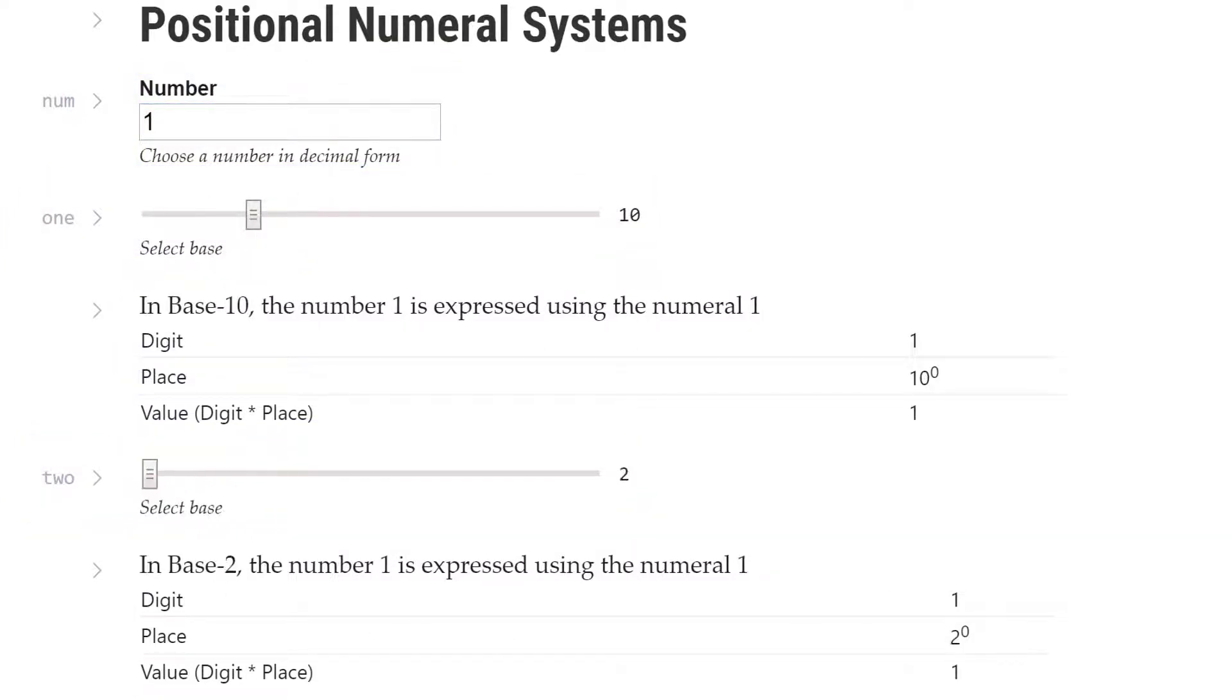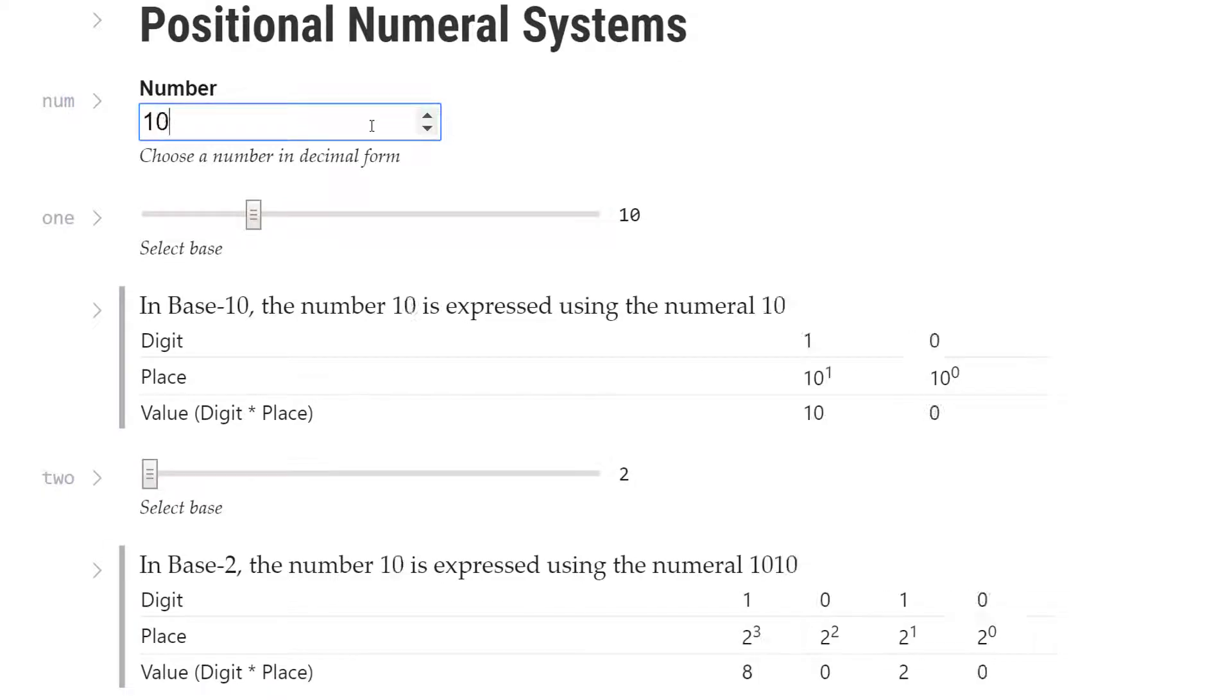Let's see how these tables work. We'll choose a higher number. The text above the table tells us that in base 10, the number 12 is expressed using the numeral 1, 2. And that's not surprising because base 10 is what we are used to.